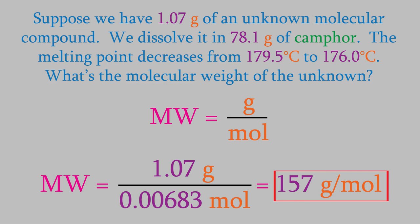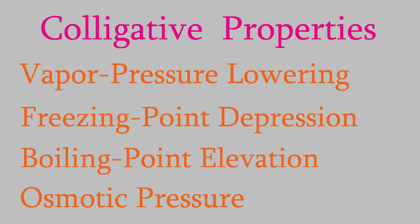It doesn't exactly tell us what the unknown is, but it does tell us what the weight is, and that helps us narrow it down quite a lot. We can use any of the colligative properties to help us find the molecular weight of an unknown. In this example, we used the freezing point depression, but we could also use any of the other three colligative properties if we're given the right information in the question.